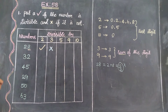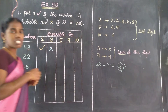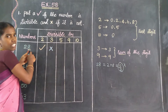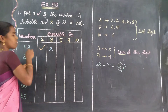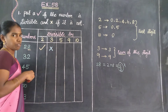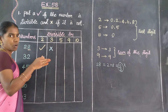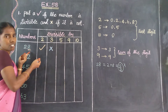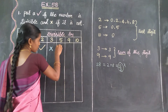Next, find out divisibility by 5. The rule for 5 is: last digit must be 0 or 5. For the number 28, the last digit is 8, which is not 0 or 5. So 28 is not divisible by 5. This gives a wrong (cross) symbol.